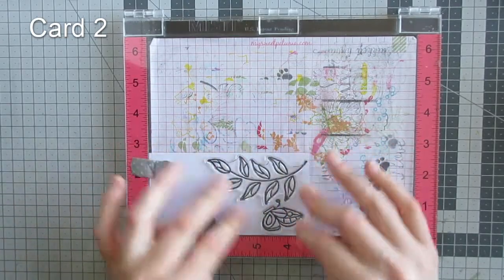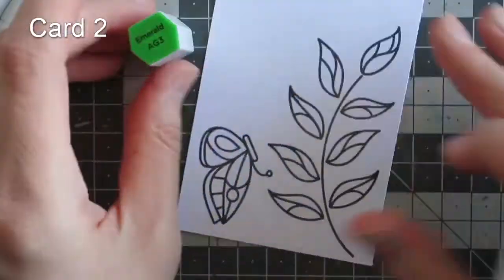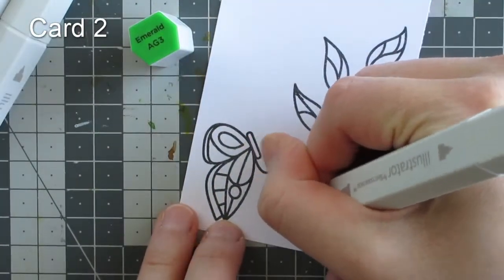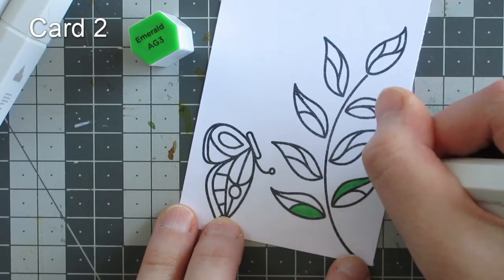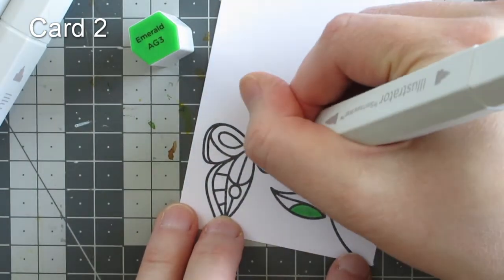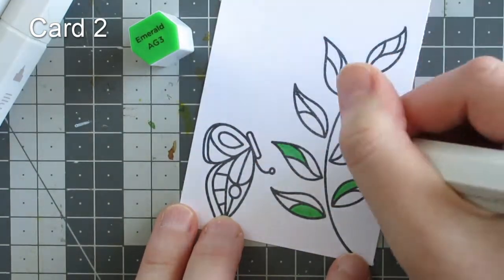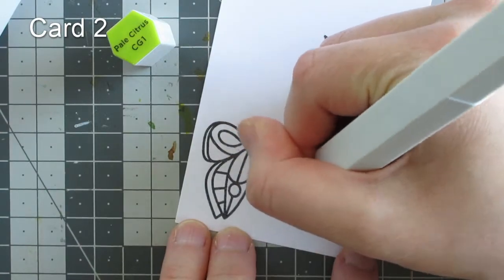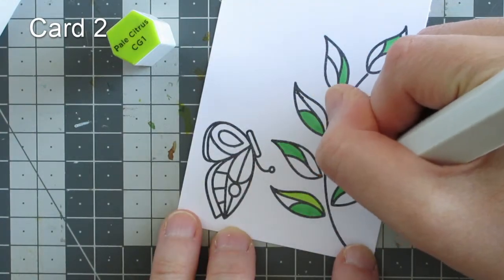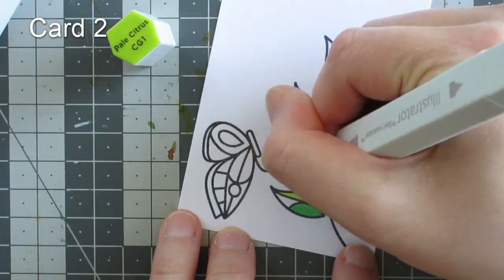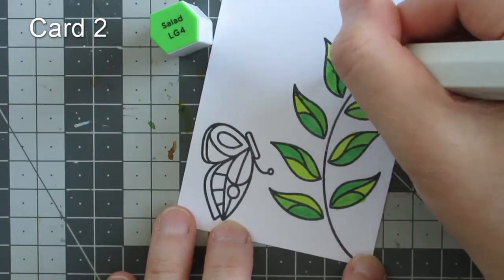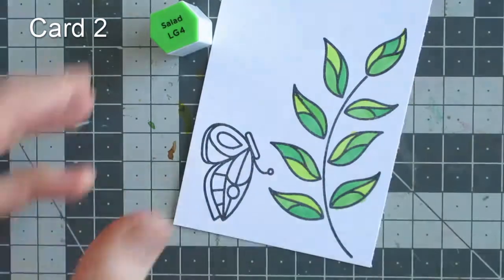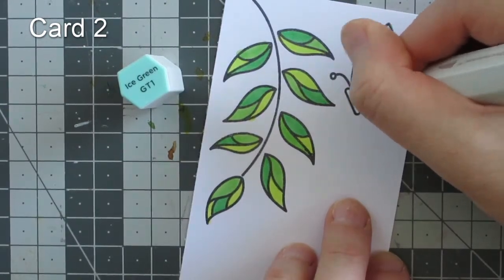I stamped the long leafy vine or branch and one of the butterflies, doing some very simple coloring. I didn't do any shading; I used a block of color per segment, which suited the look of these stamps. I'm using my Spectrum Noir Illustrator markers.